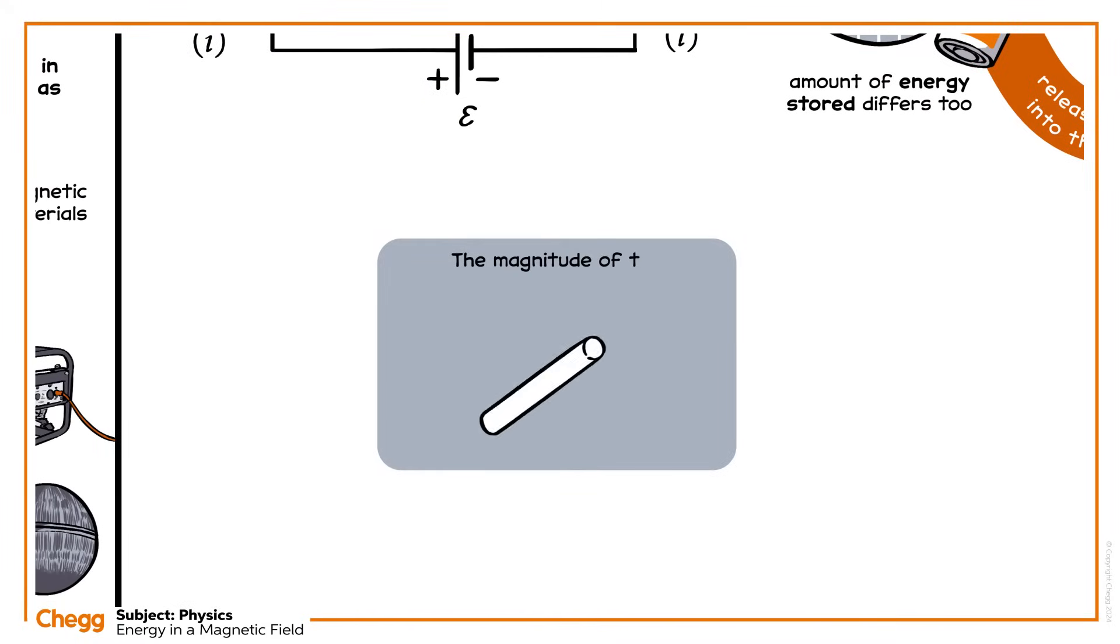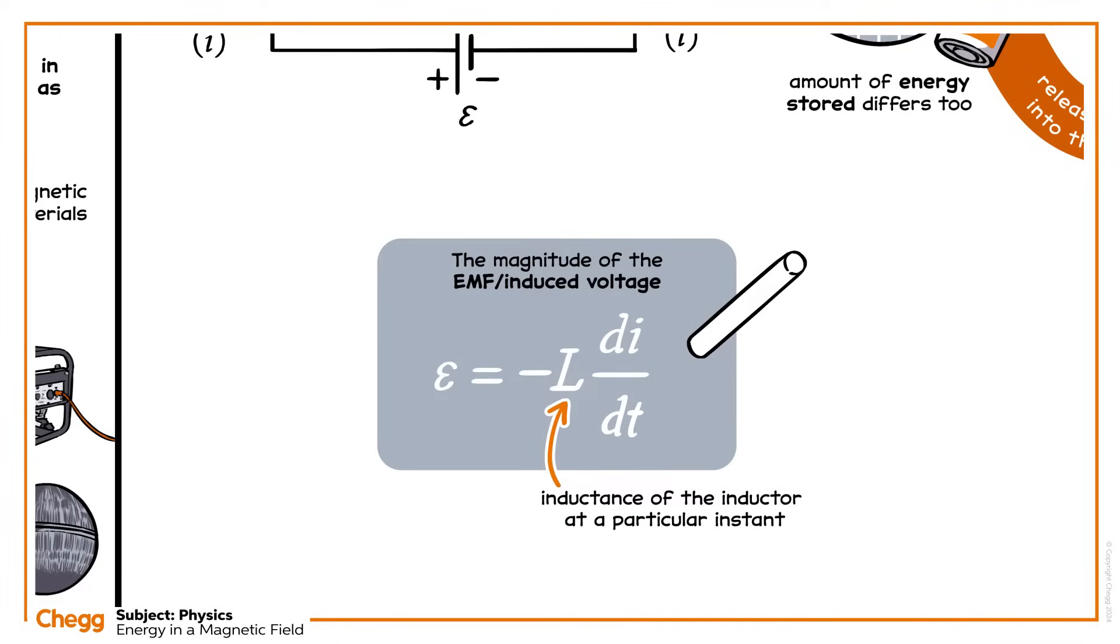The magnitude of the EMF, or the induced voltage, is equal to minus L times by di over dt. Where L is the inductance of the inductor at a particular instant, and di over dt is the rate of change of current.